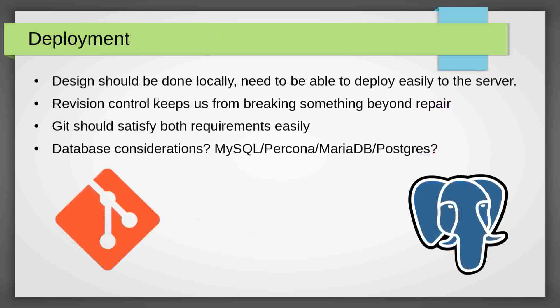The next thing we need to look at is actually deploying the site. Since we're designing locally, we need a way to easily deploy changes to the server so they can be displayed on the main website. Basically, we're going to keep our tinkering off the main site until we're ready to go live with it. We need a method for revision control to keep us from breaking something beyond repair, and git will satisfy both of those requirements. That will let us edit locally, commit, then push our changes up to the Asylum 7 git server, and then just do a git pull from the site when we're ready to go live. This gives us the revision control we're looking for, for free.